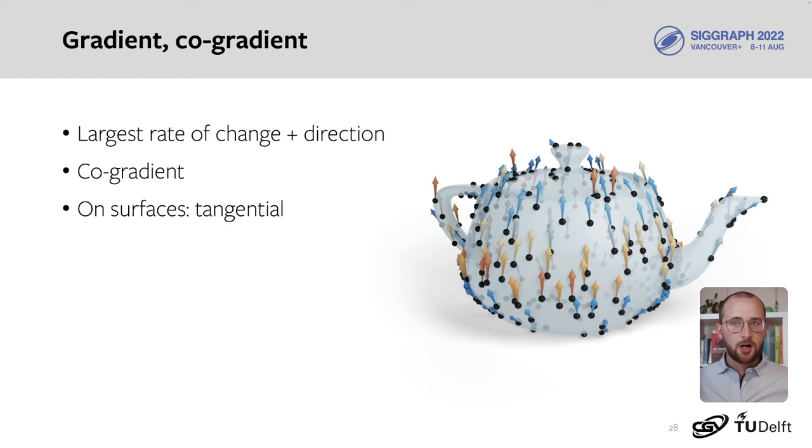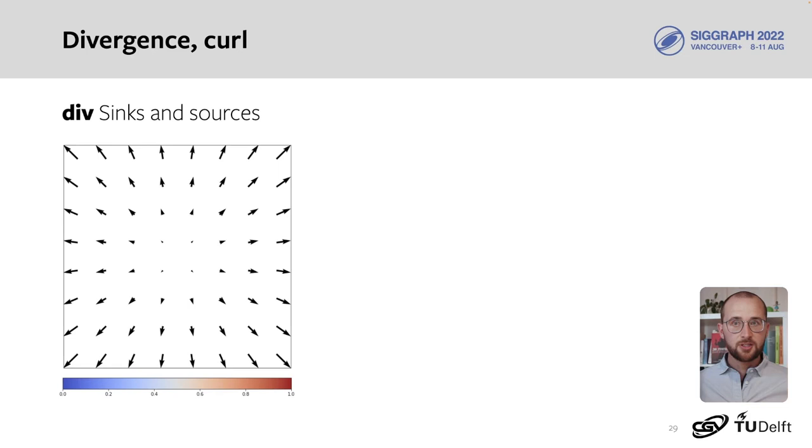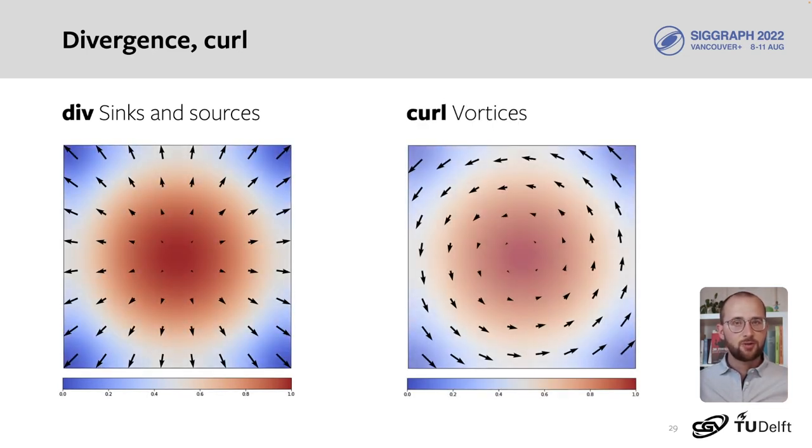Divergence and curl are commonly used to analyze vector fields. Divergence measures how much a vector field points out of a point, and curl measures how much a vector field rotates around a point.